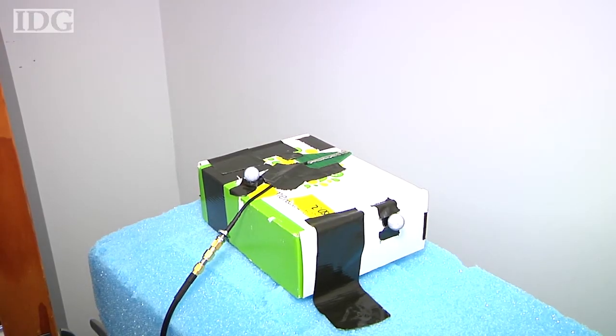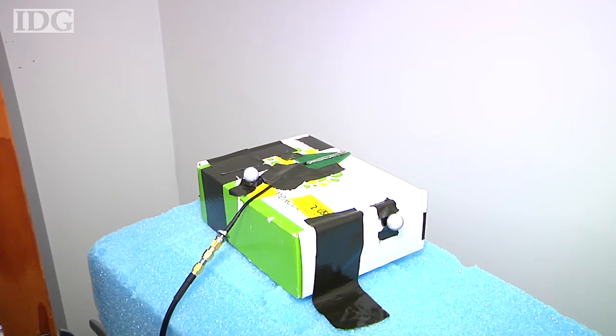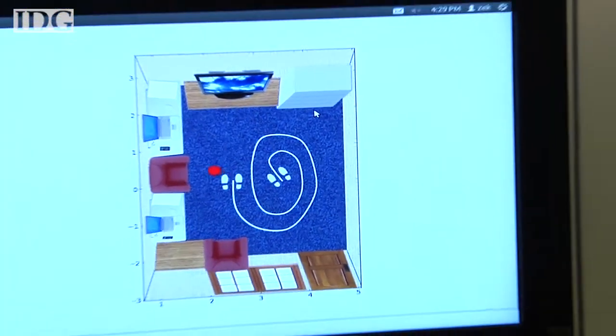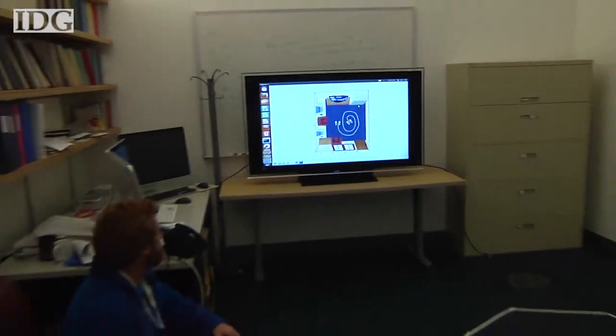At MIT's Computer Science and Artificial Intelligence Laboratory, or CSAIL, a person could walk around a room while being tracked, which is represented by the red dot on the screen. The marks on the floor were only to show how accurate the system is.